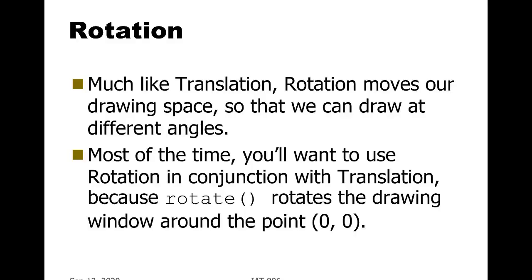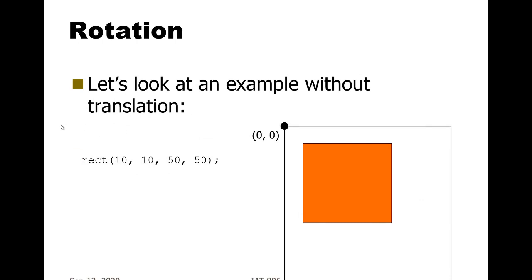Now let's talk about rotation. Much like translation, rotate moves our drawing space so that we can draw at different angles. Most of the time you'll want to use rotation in conjunction with translation because rotate rotates the drawing area around the point zero, zero. Let's just see how that might look.